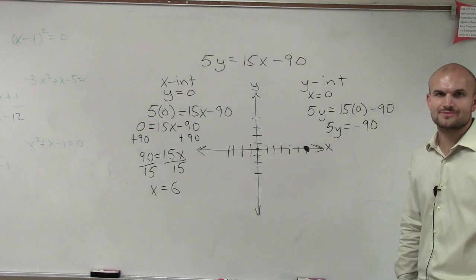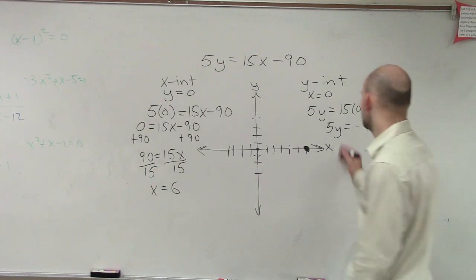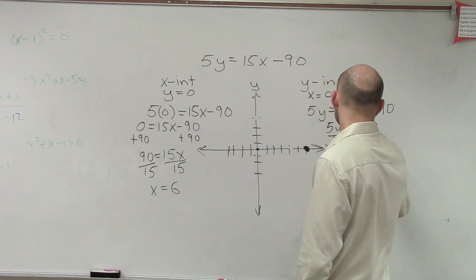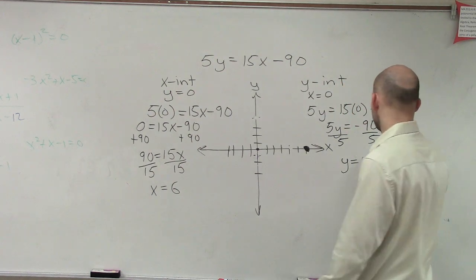Once you get used to this, that's why we do our homework, right? Get this nice and quick. You can be like, oh, it's just 90 divided by 5, or negative 90 divided by 5. So I divide by 5, y equals negative 18.